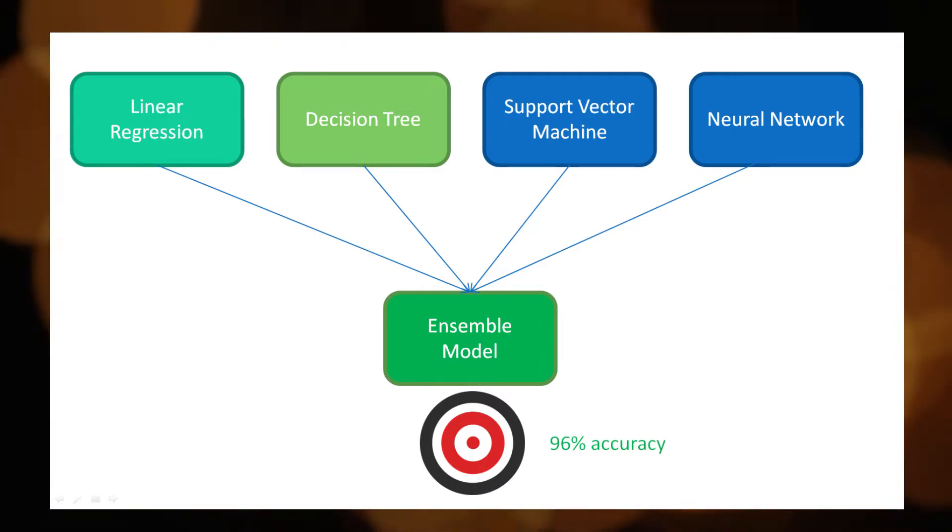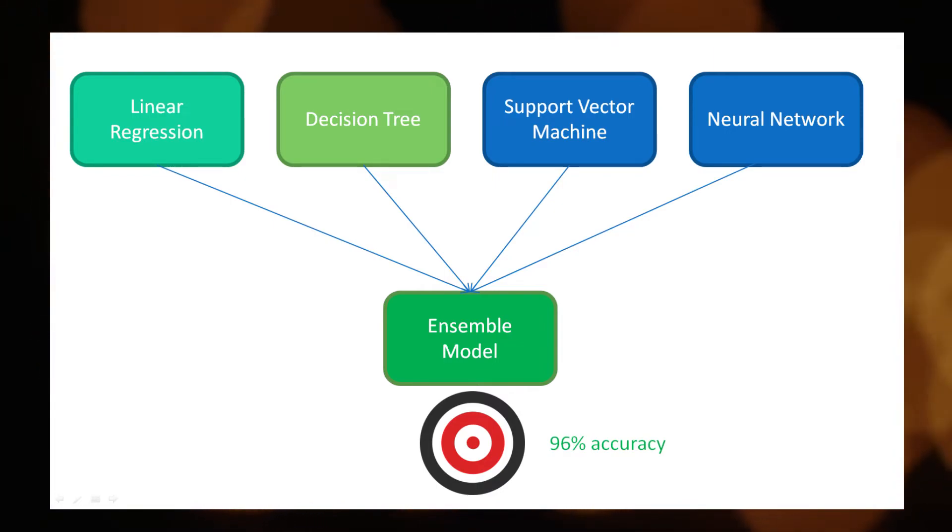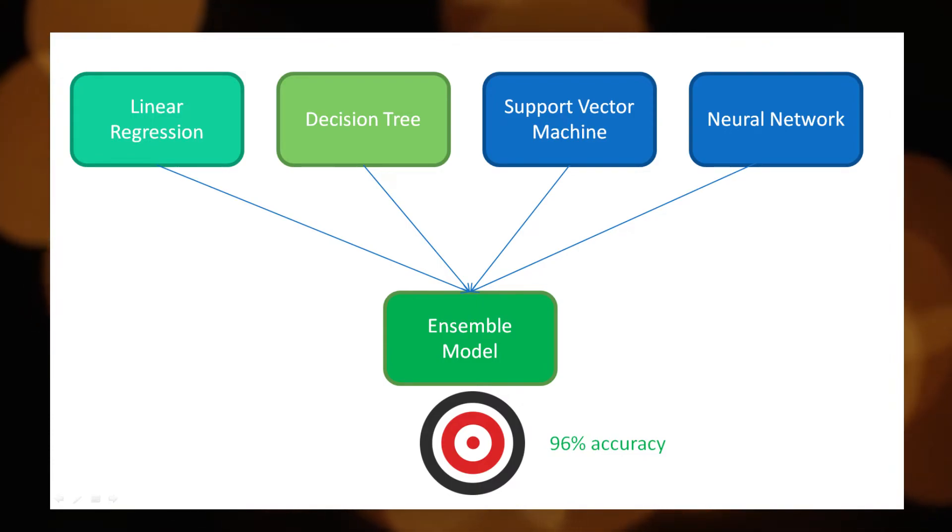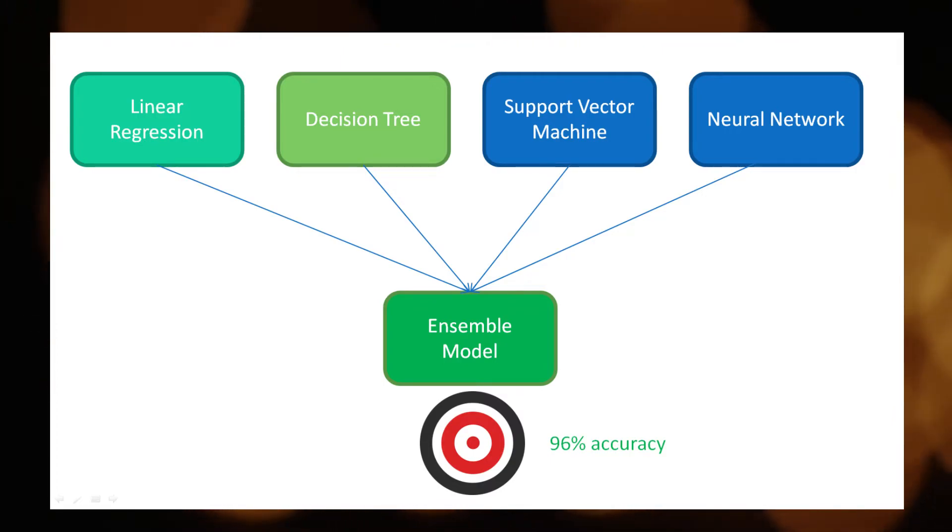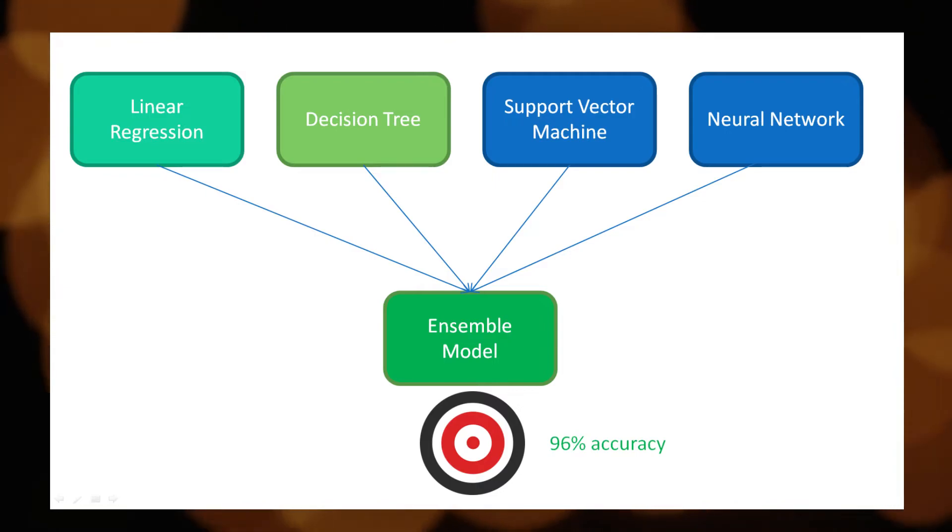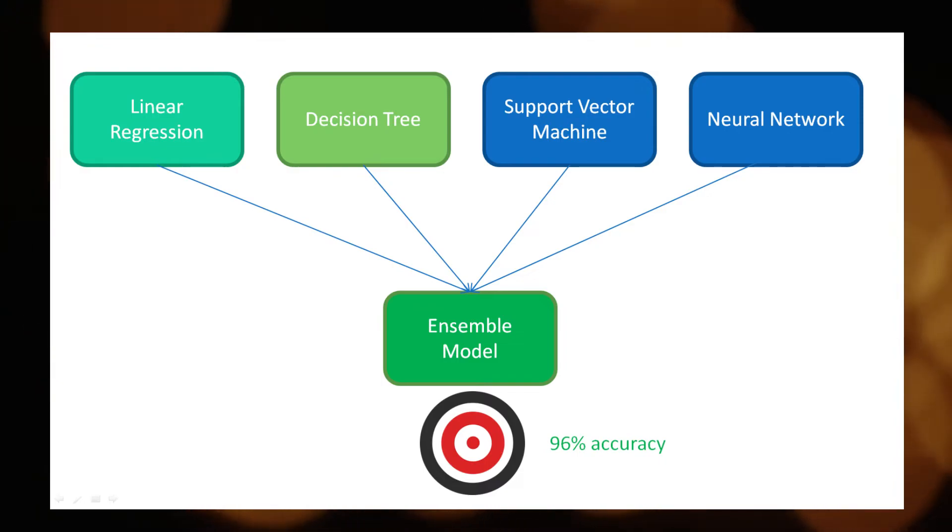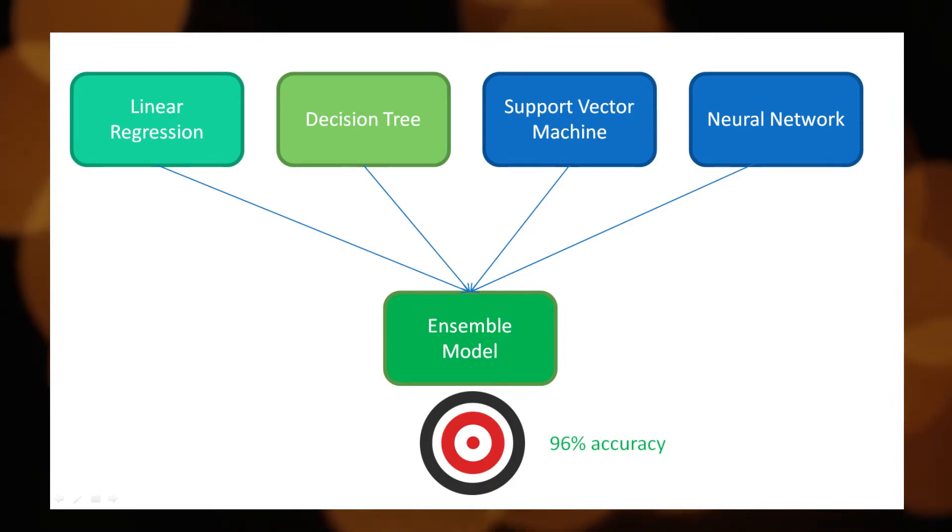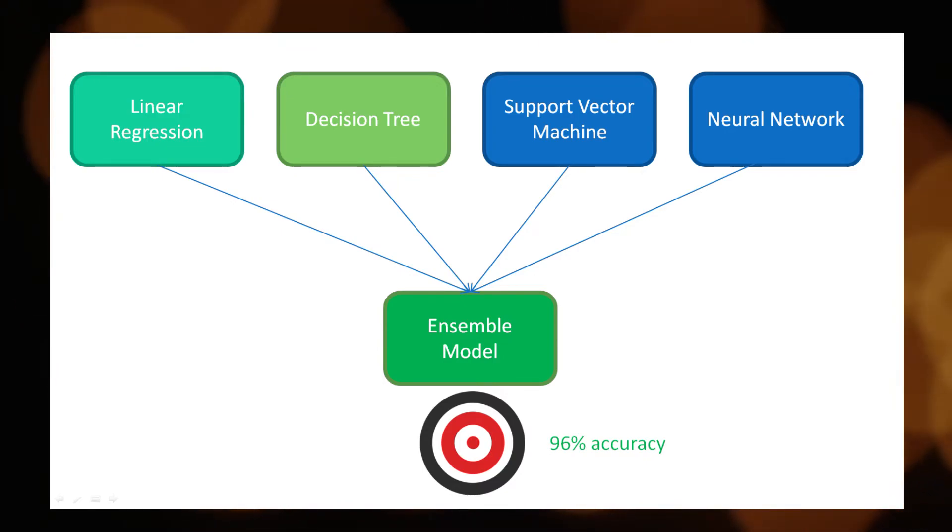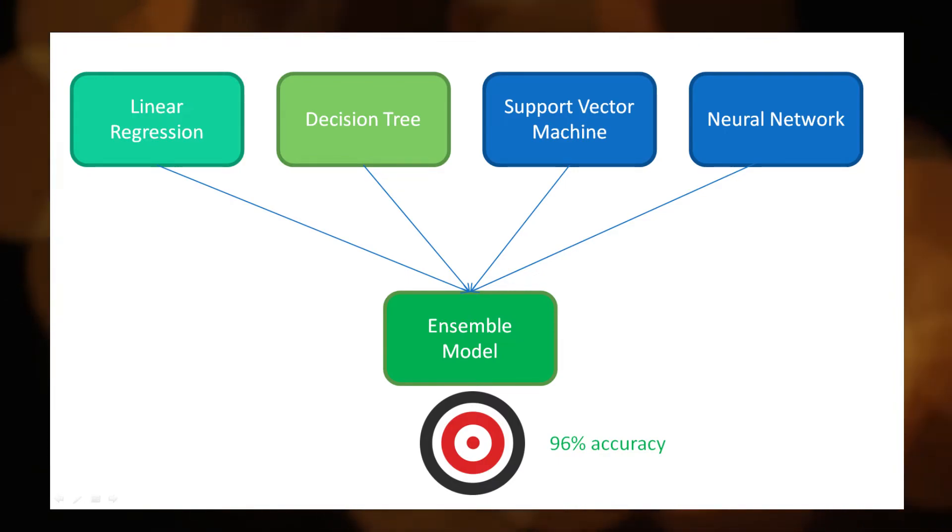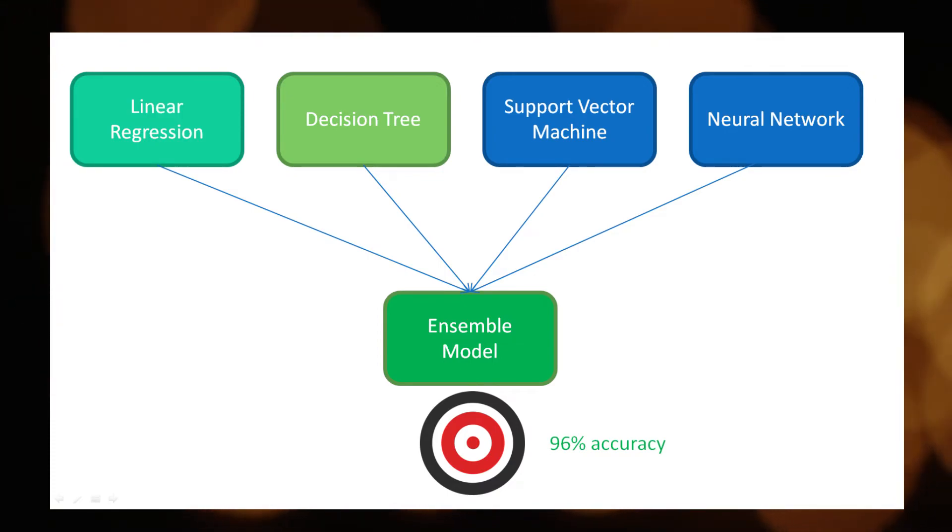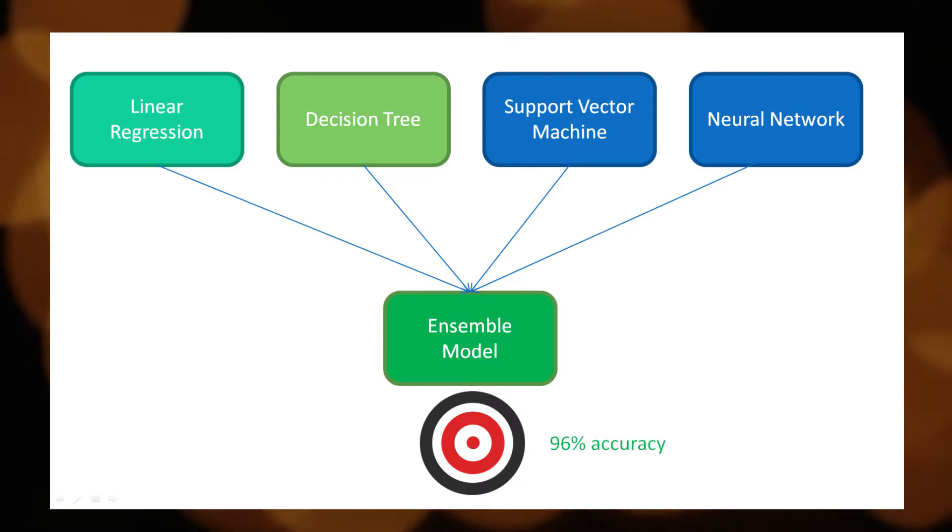And the fourth one is ensemble methods. This is one of the most common methods which is used by every data scientist. If you are hearing the ensemble word for the first time, this is the explanation. Ensemble methods are nothing but combining multiple trained models and producing good accuracy at the end. This is the process of ensemble methods. Ensemble method is a winning strategy of every data scientist and machine learning engineer. This can be achieved through two common methods: bagging and boosting. I am planning to create a separate video for ensemble methods in machine learning. In that video, I will explain more deeply about these two techniques. You can expect this video next week.